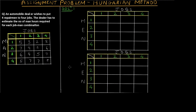Here's the question: an automobile dealer wishes to put four repairmen to four different jobs, and the dealer has to estimate the number of man-hours required for each job combination. Our aim is to assign exactly one job to each person so that the total time required to complete all the jobs is minimum. Jobs are represented as columns one through four.